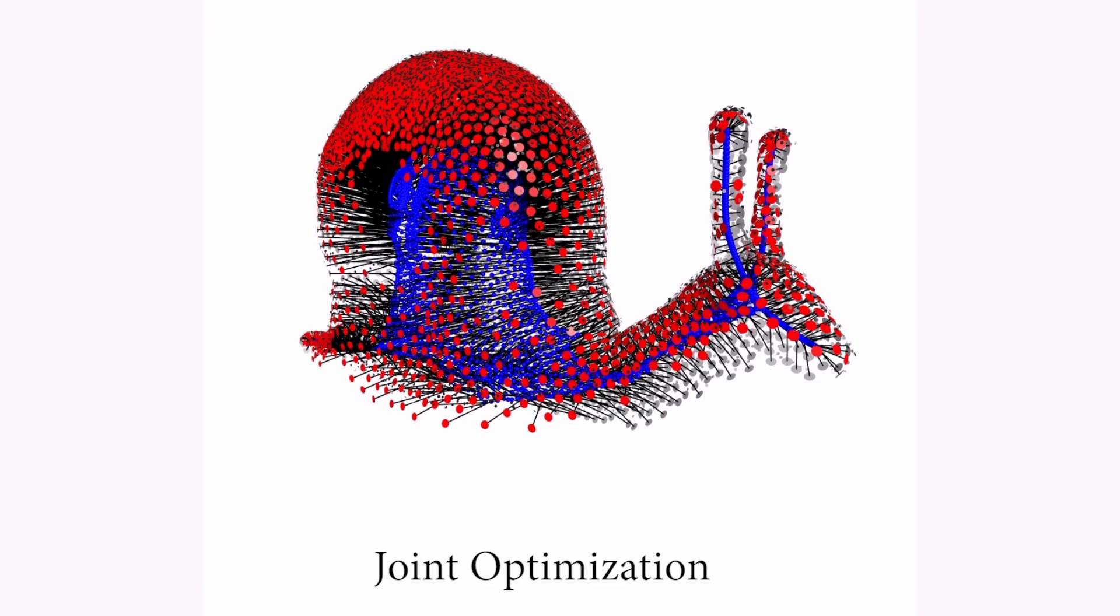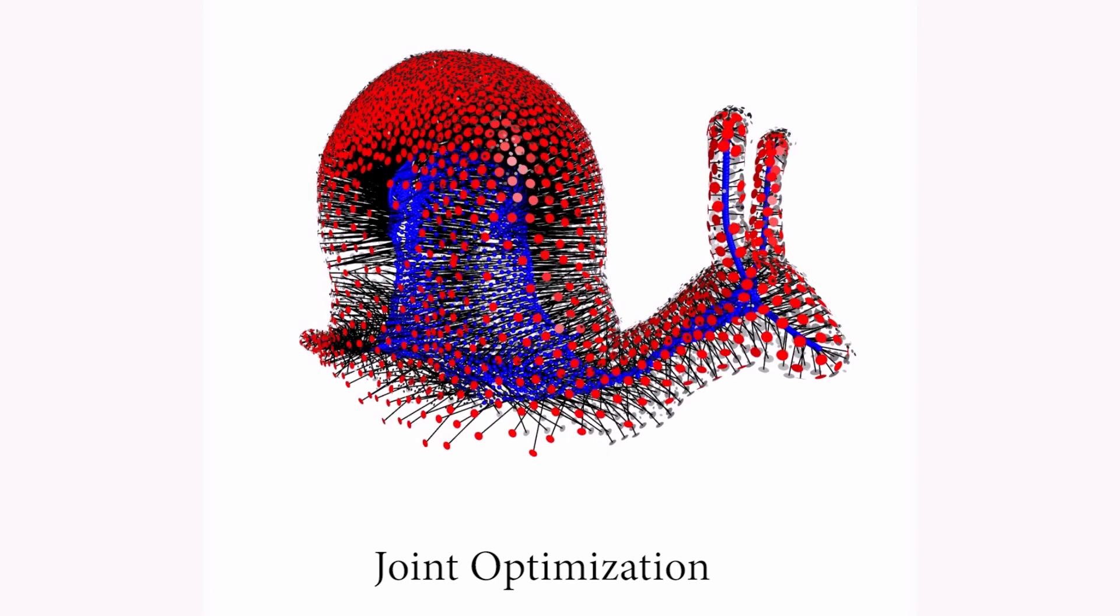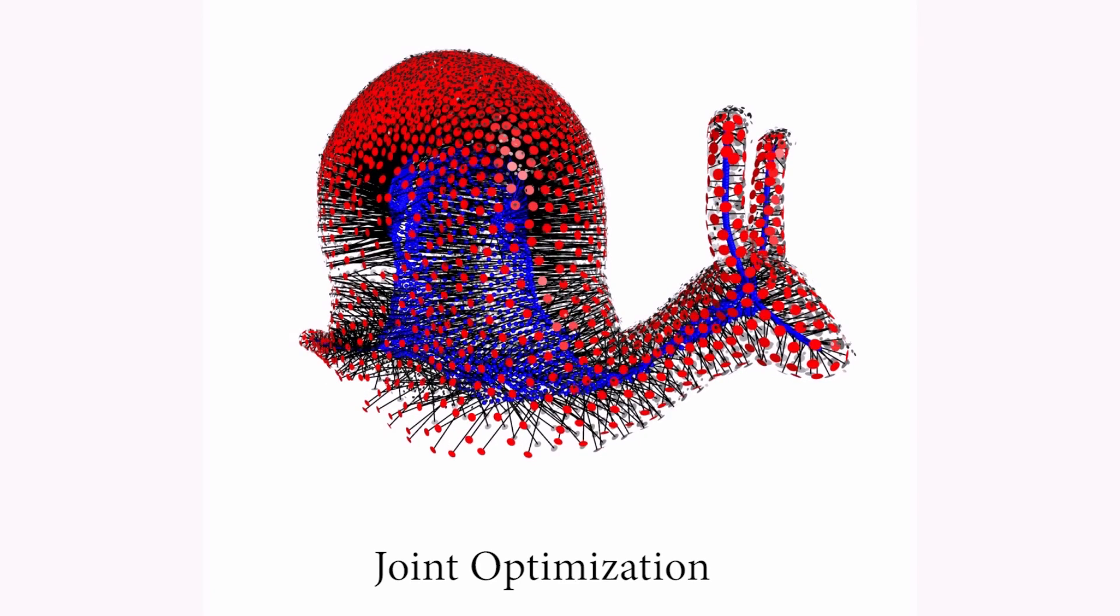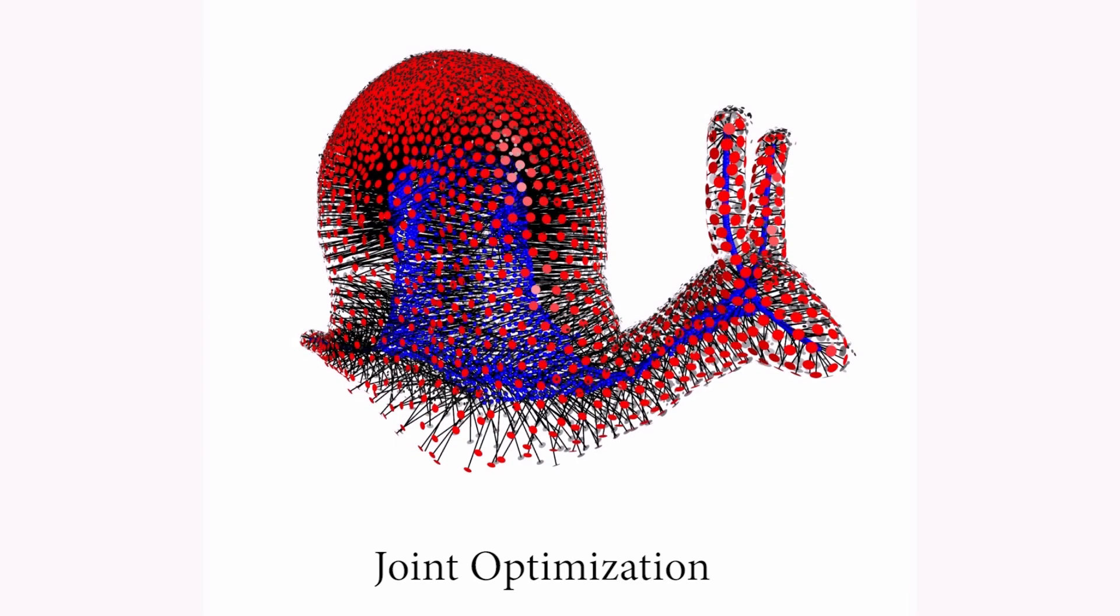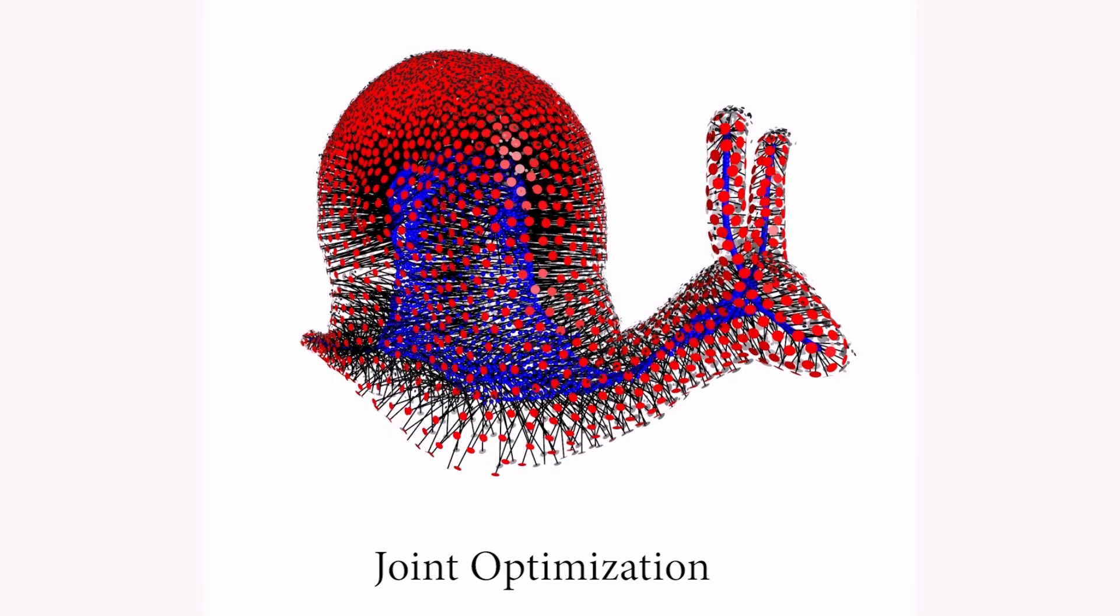This example demonstrates our optimization objective, which is to fairly distribute the deep points across the surface and mesoskeleton, such that the deep point orientations agree with the surface normals.